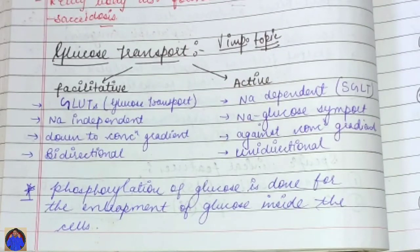Welcome back to the channel. In this video we are going to discuss glucose transport. Glucose transport is divided into two parts: facultative transport and active transport.